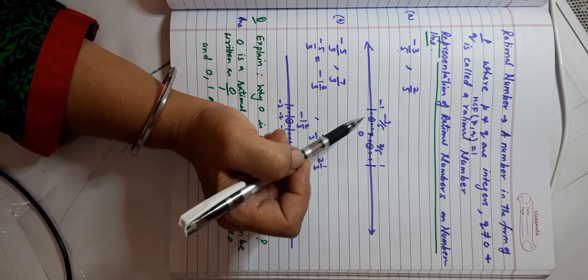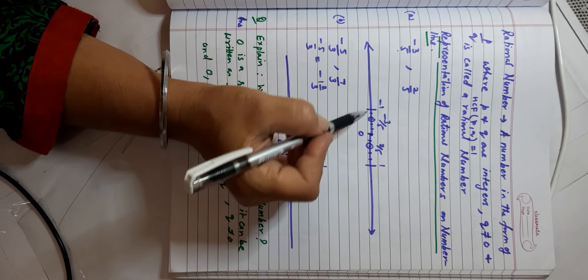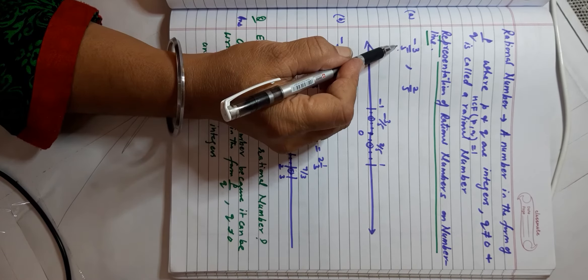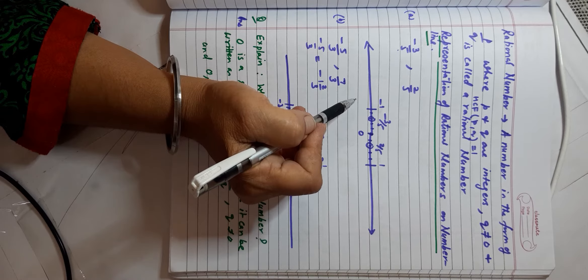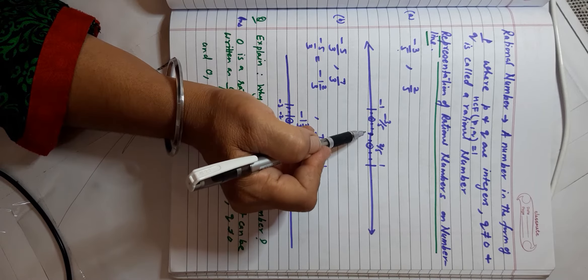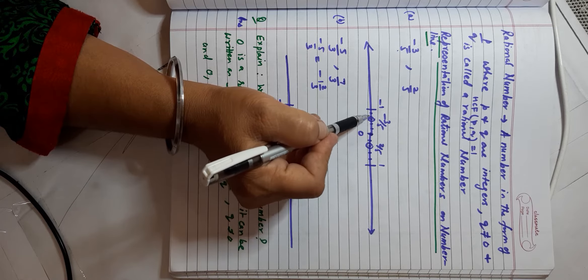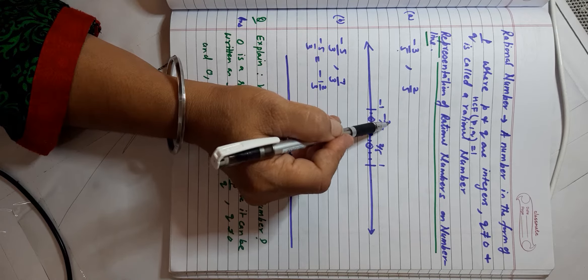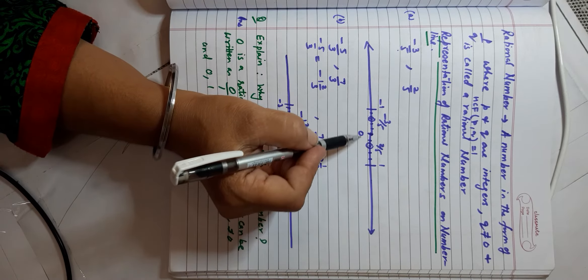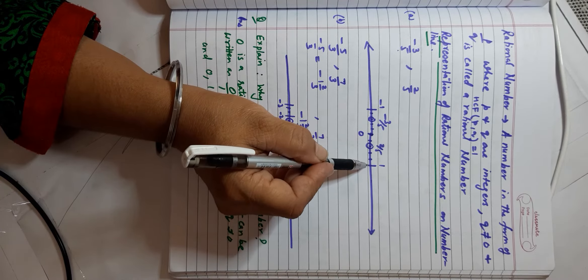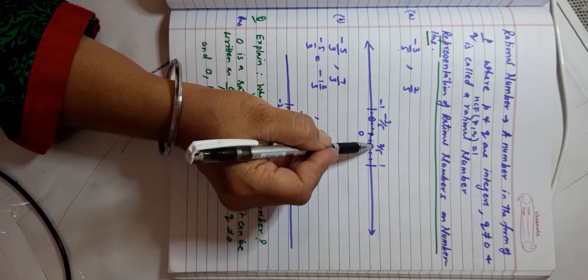We also discussed representing rational numbers on the number line. For example, to represent −3/5: the denominator indicates that one unit should be divided into five equal parts. Since it's negative, it lies to the left of 0. I divide the unit on the left into five equal parts and take three of them: 1, 2, 3 — this point is −3/5. For 2/5, it's positive, so the unit on the right is divided into five equal parts and I take 2 — that point is 2/5.